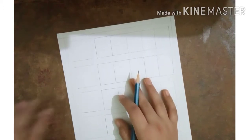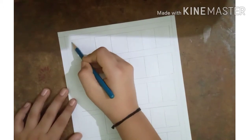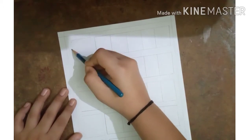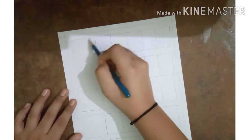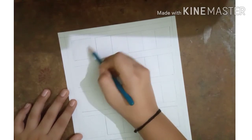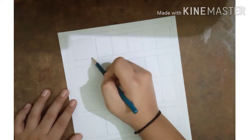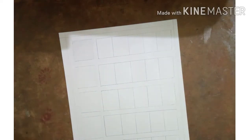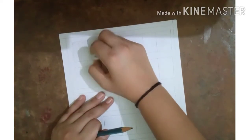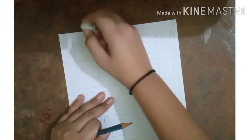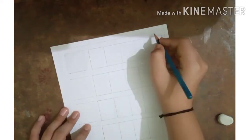First of all, you have to draw rectangular boxes like this, and then grab a pencil and start shading diagonal lines, which I am showing you in this video. Remove the extra lines which have come out of the box.